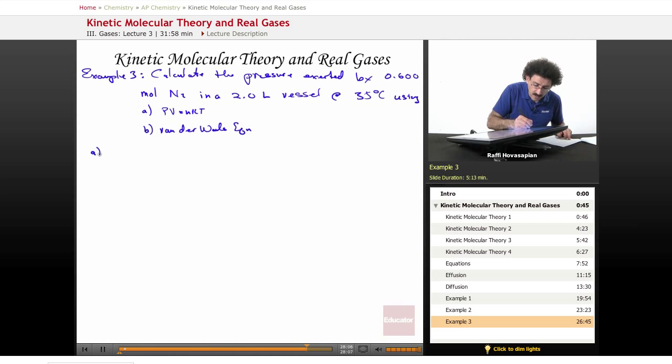So A, PV equals nRT. We rearrange, we get P equals nRT over V, and we just plug the values in.